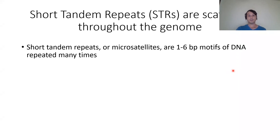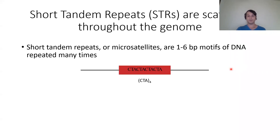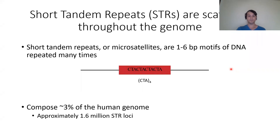Short tandem repeats, also called microsatellites — I'll generally refer to these as STRs — are one to six base pair motifs of DNA repeated many times back to back. Here's a toy example of a trinucleotide CTA repeat, repeated four times. While these aren't huge loci, they compose about 3% of the human genome, with about 1.6 million of these loci scattered throughout.